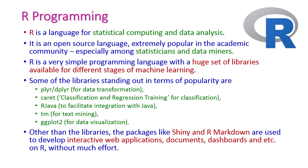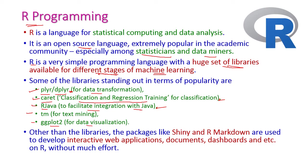The second very popular programming language is R, which is a very simple and open source programming language, extremely used by scientists and data miners. R has a very huge set of libraries available for different stages of machine learning. The popular libraries used in R are PLYR and DPLYR for data transformation, caret (classification and regression training) for classification problems, Rjava to facilitate integration with Java, TM for text mining, and ggplot2 for data visualization. Additionally, packages like Shiny and R Markdown are popular for developing interactive web applications, documents, and dashboards.